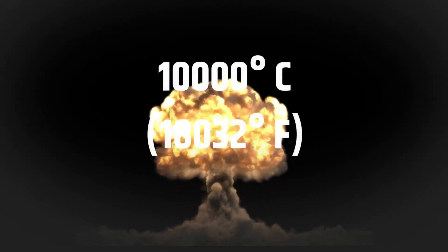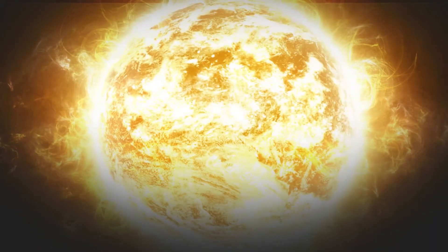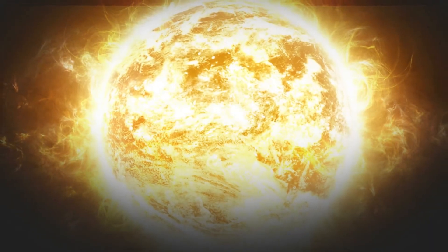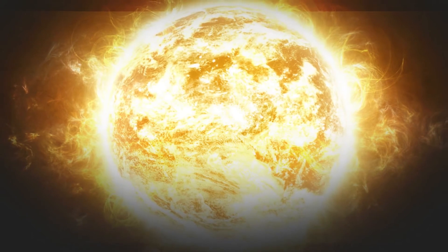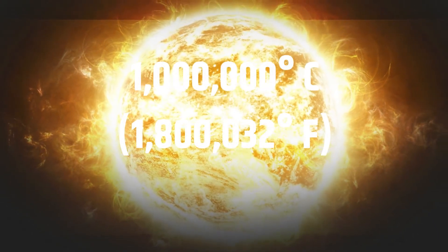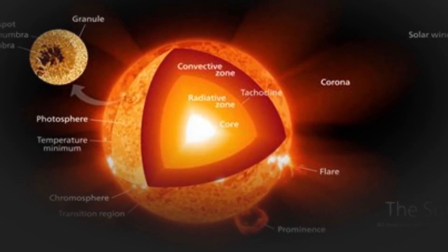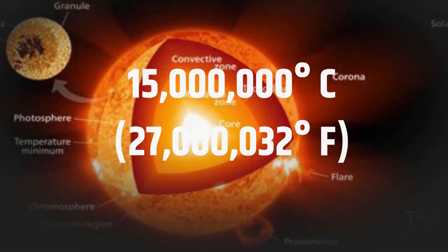Higher than both is the temperature caused by a nuclear explosion, which amounts to 10,000 degrees Celsius or more. Turning to the sun's atmosphere, it records an incredible temperature of 1 million degrees Celsius, and the sun's core has a temperature of 15 million degrees Celsius.